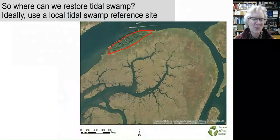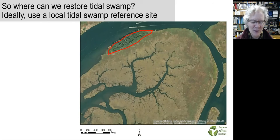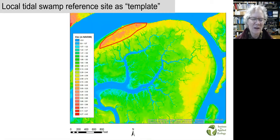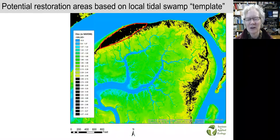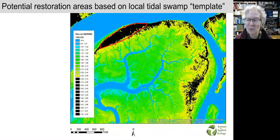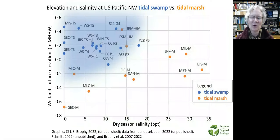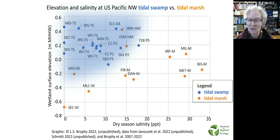So where can we restore tidal swamp? We can restore it where the elevations and salinities are appropriate. Ideally, we will find a local tidal swamp reference site to build our planning on — for example, forested tidal wetlands on a nearby island might be suitable restoration sites. Within a short distance of only a few hundred meters, we can assume salinity will be pretty similar and use elevation alone as a shortcut. However, if we don't have a local reference site, we turn to reference conditions datasets like the graph shown earlier. There are other factors besides elevation and salinity that influence tidal swamp establishment, but finding sites that fall into that blue zone is a good start.